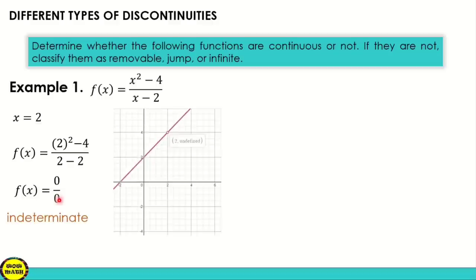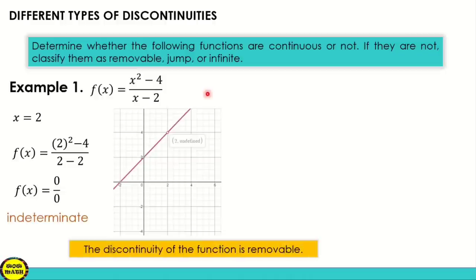Looking at the graph, there is a hole at x equal to 2, meaning x = 2 is not in the domain. Since it is removable discontinuity, we can redefine the function to make it continuous. We take the limit of (x² - 4)/(x - 2): factor the numerator to get (x+2)(x-2)/(x-2), cancel (x-2), and the limit as x approaches 2 equals x + 2. Substituting, the answer is 4.